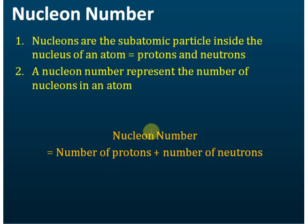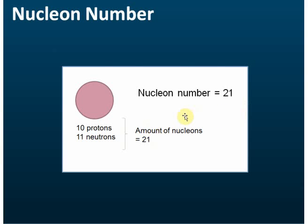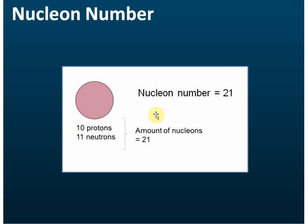Let's look at an example. If an atom has ten protons and eleven neutrons, then the total number of nucleons is ten plus eleven, which equals 21. Therefore, the nucleon number is equal to 21.